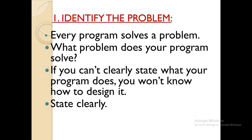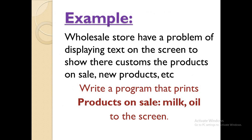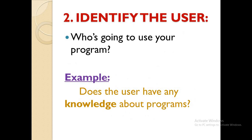We're going to look at each one of the steps. Number one is to identify the problem. Every program solves a problem, so you should state clearly the problem so that you can create the best program. For example, if you have been approached by a wholesale store and they want a program that would print products on sale on the screen or print new products, you should write something like: writing a program that prints products on sale, and name the products like milk, oil, on the screen.